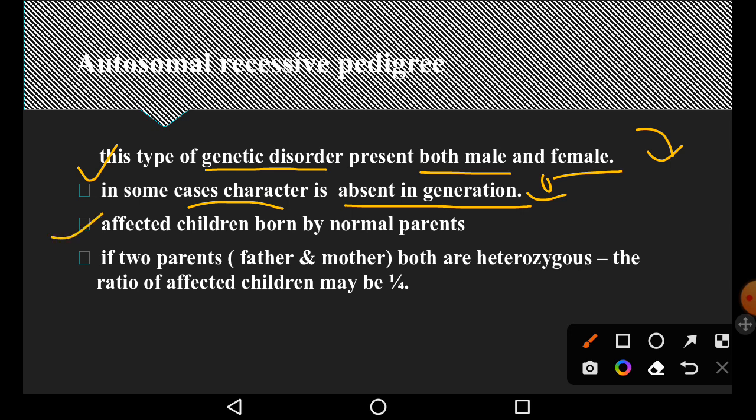The third point is that affected children are born by normal parents. This character which you remember in mind is that affected children, if you take any disorder, he is affected but his parents are normal. In his child, he is able to see it. So how will he be homozygous recessive?